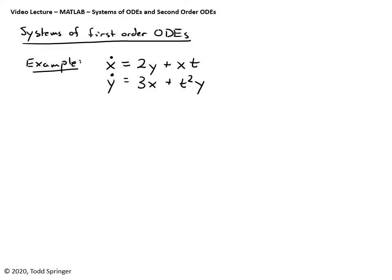First, I need to explain what I mean by a system of first-order ODEs. Here's an example: I've got two ODEs for two unknown functions. The goal is to solve for the two functions x(t) and y(t). I have two ODEs describing those functions. You can see those two ODEs are coupled together — I can't solve equation one for x because it has y in it, and I can't solve equation two for y because it has x in it. So we say these are coupled ODEs.